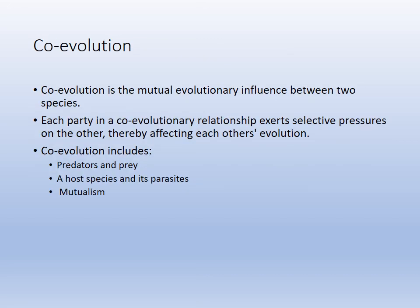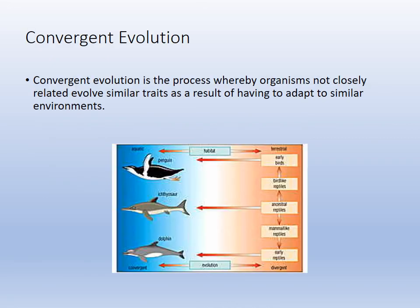Co-evolution is when organisms evolve together. Predators and prey evolve together. Hosts and parasites evolve together. And mutualism is when both benefit — that's co-evolution as well. Convergent evolution is when changes make different organisms appear superficially alike because of a similar habitat. The image shown — the penguin, the ichthyosaur, which is an ancient swimming reptile, and the dolphin — all have that torpedo-shaped body because they live in water. They have different lineages but a similar body type because the environment selects that body type.